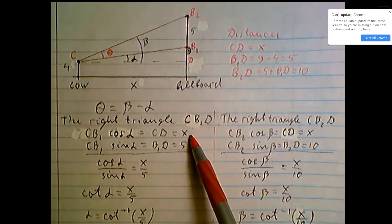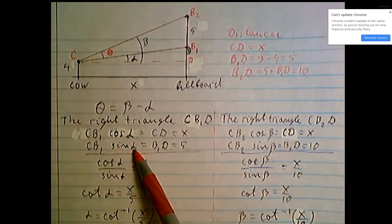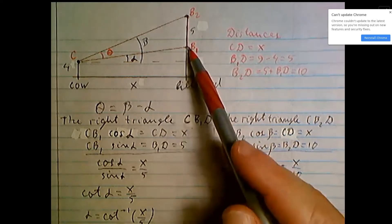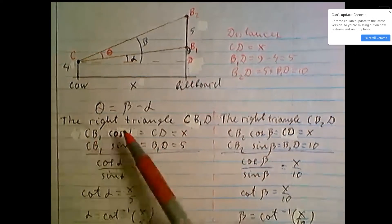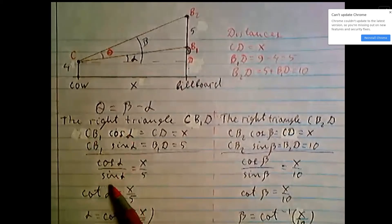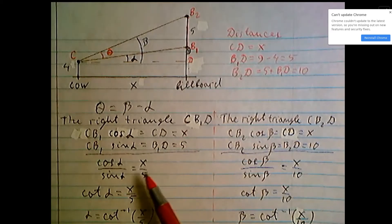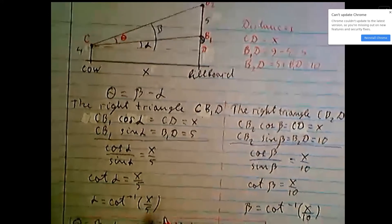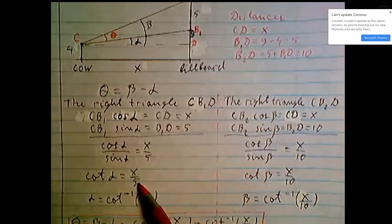...will be leg B1D, so it's 5. If we divide hypotenuse CB1, it will be cosine alpha over sin alpha equal x over 5. Cosine alpha over sin alpha is cotangent, cotangent alpha equals x over 5.